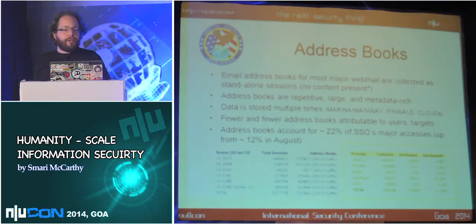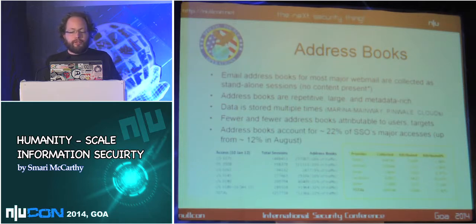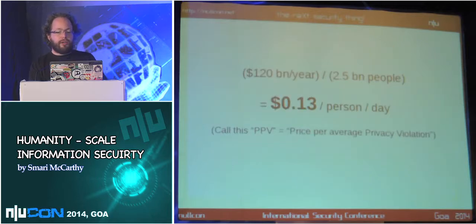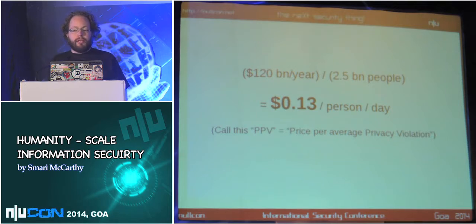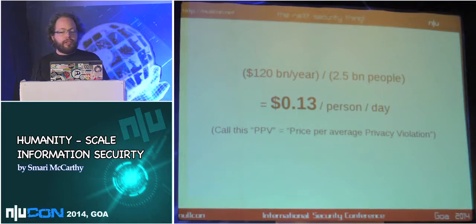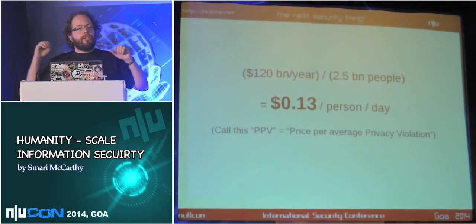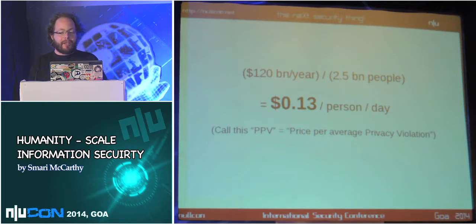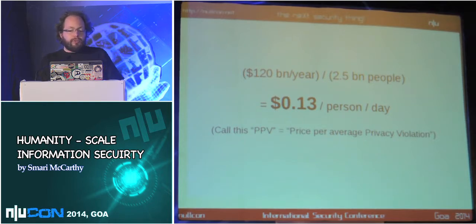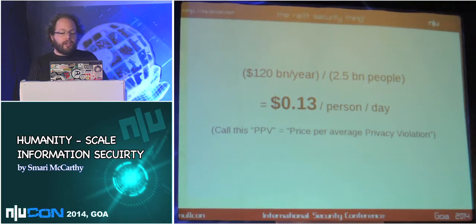Using these numbers: $120 billion over 2.5 billion people over 365 days gives us a cost estimate of this catchall surveillance at about 13 cents per person per day. Let's call that figure PPV — price per day per violation. This is incredibly cost-effective for surveillance states.